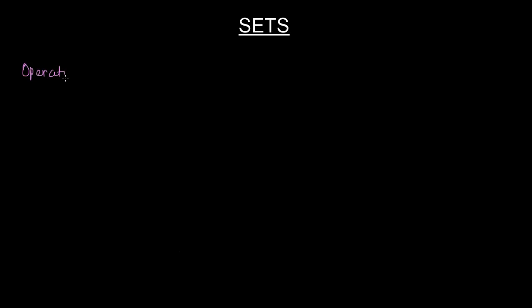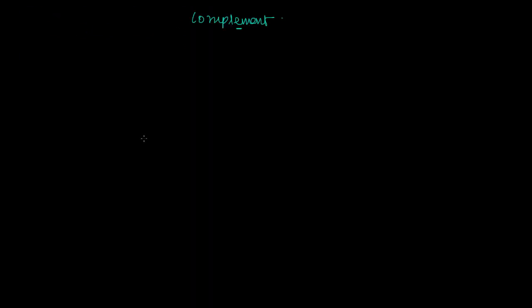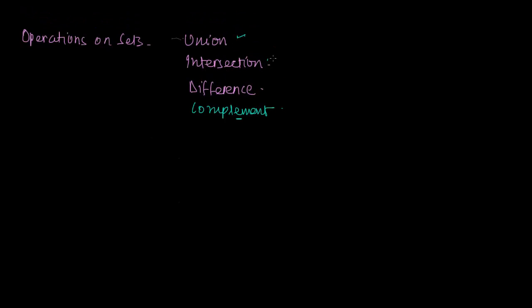We continue the operations on sets. Till now we have done the union of the set, the intersection of the set, and the difference of the set. Right now we do the complement of the set. The union, intersection, and difference require two sets to be operated upon, but the complement does not require two sets.